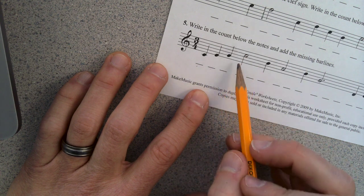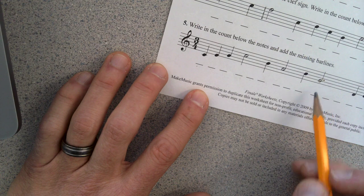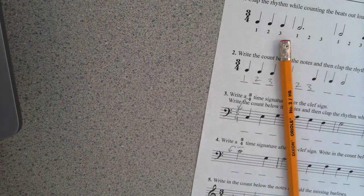One, two, three, bar line, one, two, three, bar line, one, two, three, bar line. That should be everything that you're missing. If you need additional help, just ask. All right.